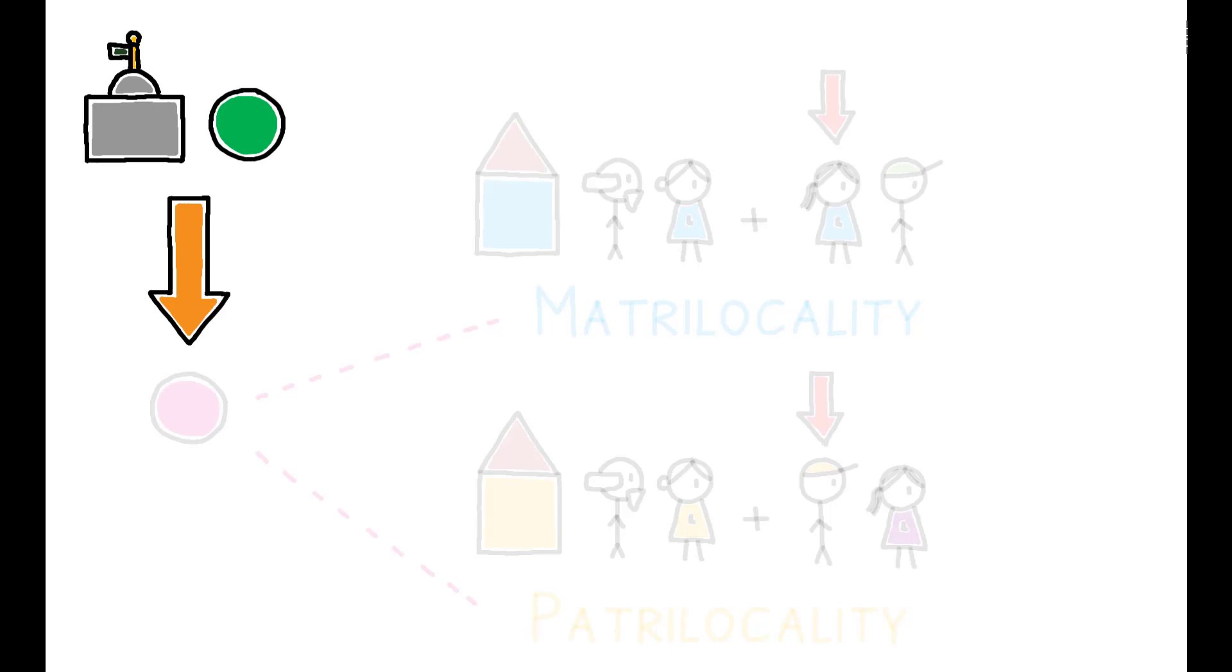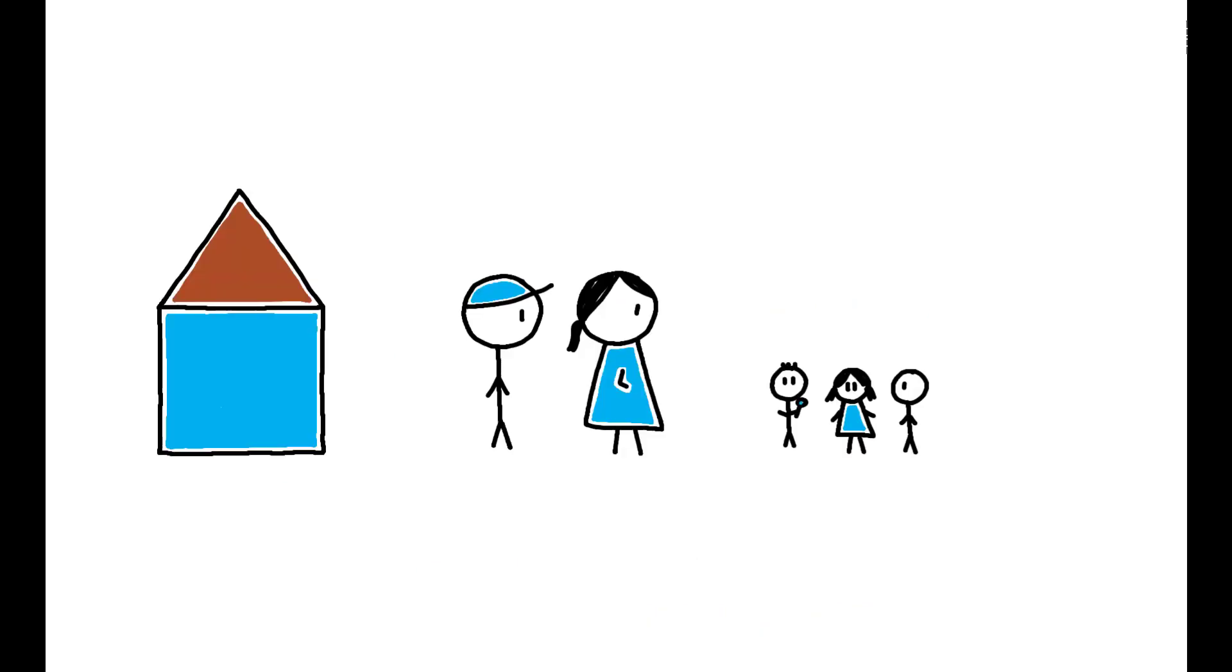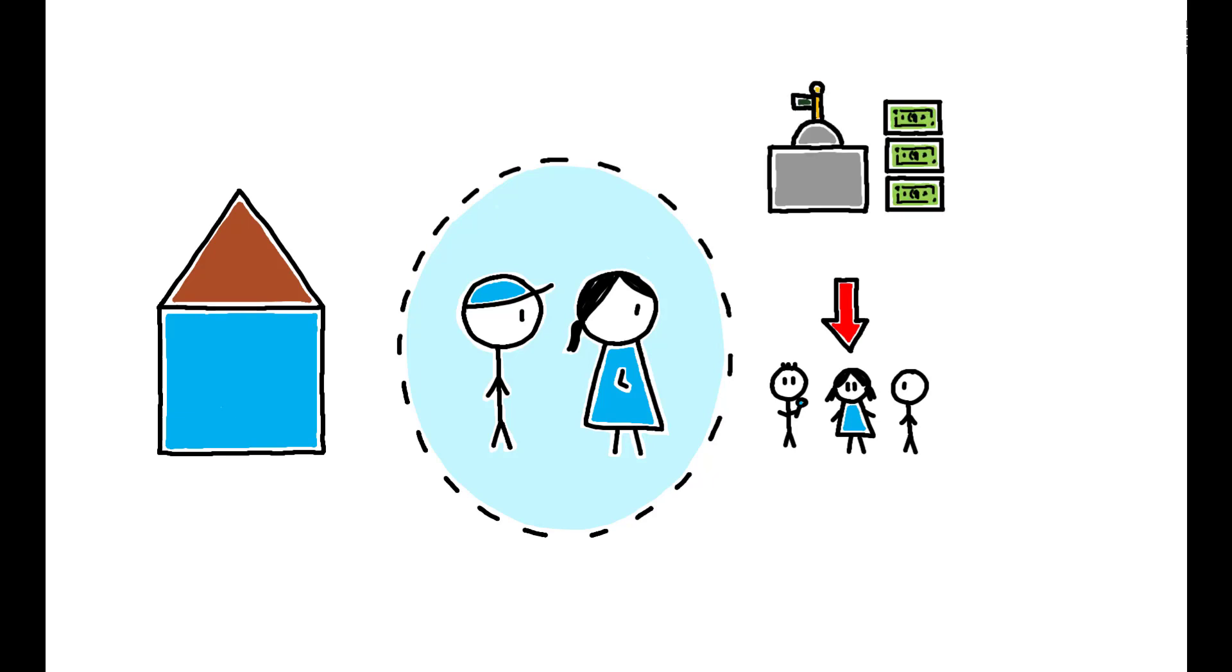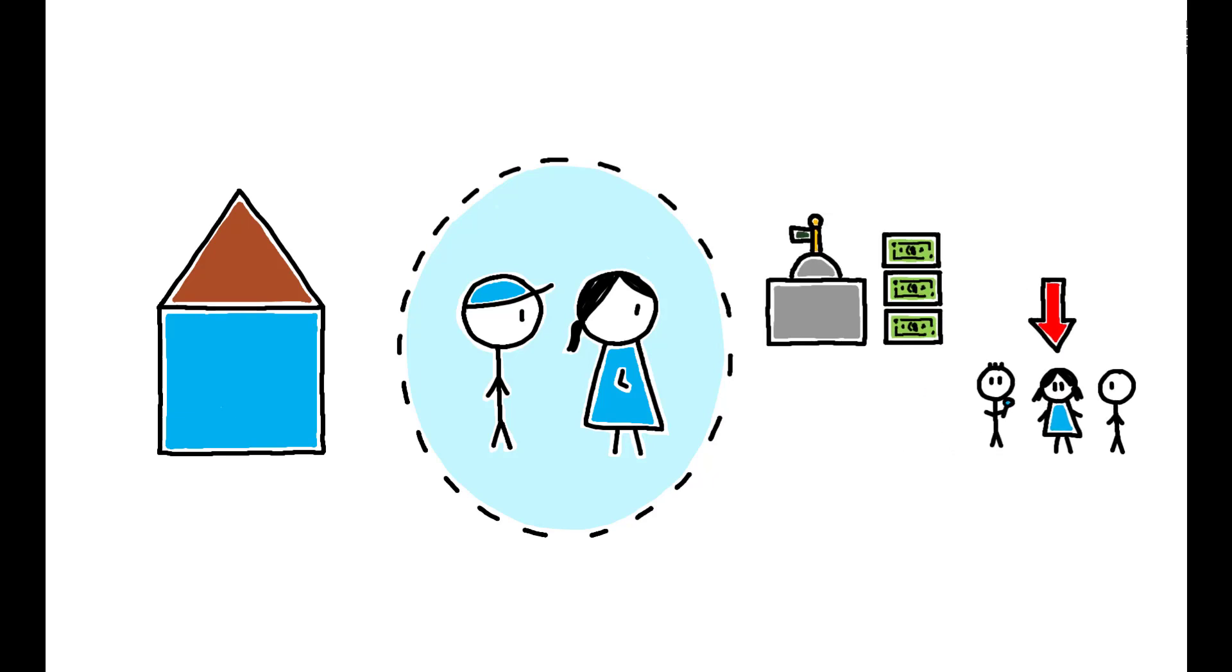To help frame the analysis, consider two potential effects of matrilocality and patrilocality. First, they can provide a form of informal insurance by designating which child will care for parents in their old age. This means that the introduction of formal savings mechanisms may crowd out these traditions.